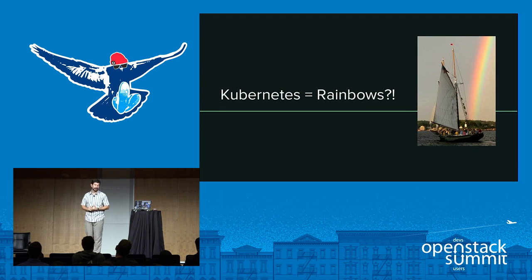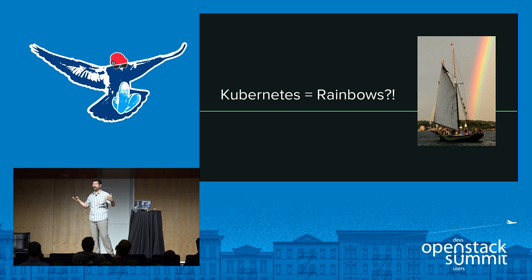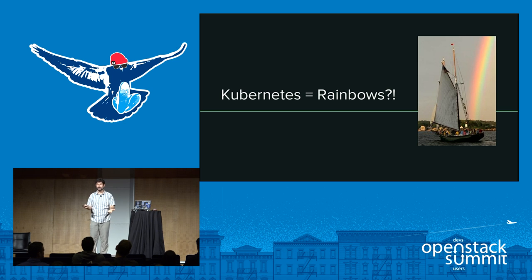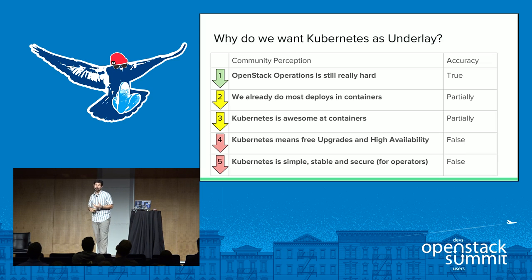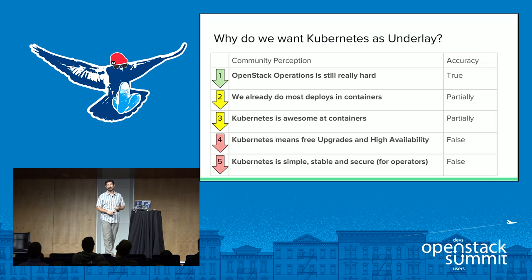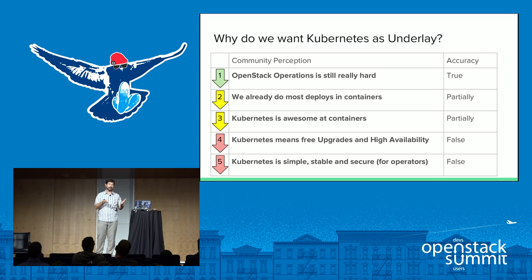The reason everybody's excited is the assumption that Kubernetes will bring rainbows and unicorns to your data center. It has built-in capabilities that can make an application designed to run in Kubernetes highly available, upgradable, robust, and durable — without doing a lot of the work you normally have to do to make applications upgradable, robust, and durable.